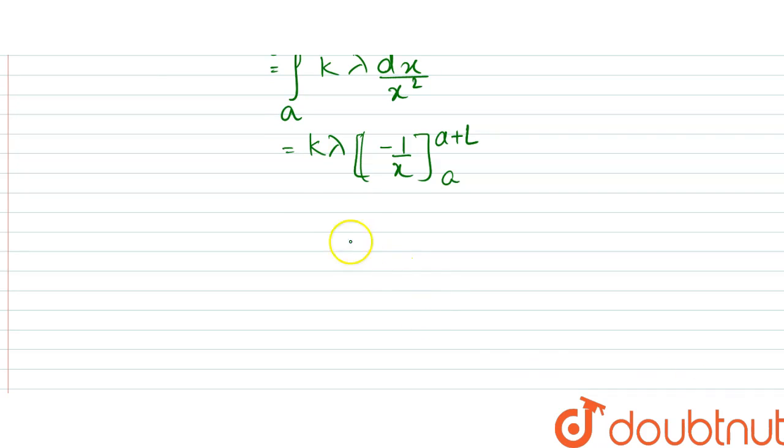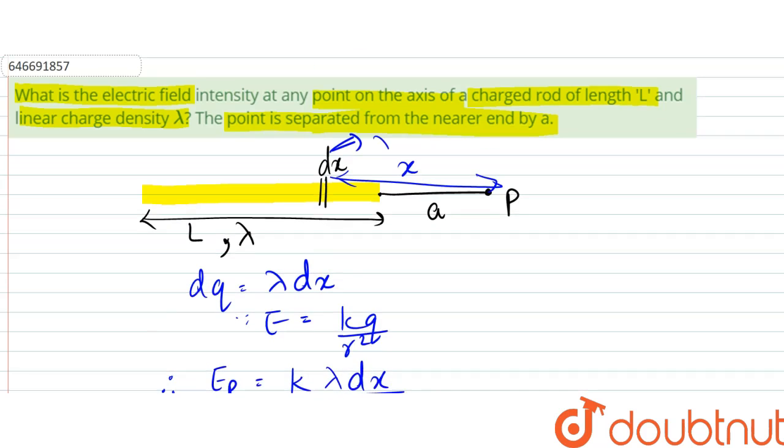So this would be equal to k lambda, 1 by A minus 1 by A plus L, which is equal to k lambda, A plus L minus A is L by A into A plus L here.